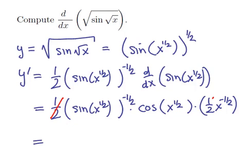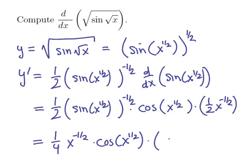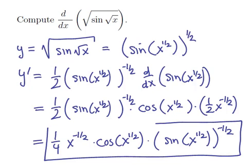Notice that the 1 half and the 1 half can be brought together into a 1 fourth. We have an x to the minus 1 half, a cosine of x to the 1 half, and then a sine of x to the 1 half raised to the power minus 1 half. This would be our cleaned up simplified derivative.